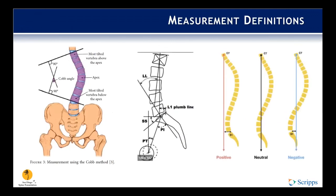For measurement definitions: the Cobb angle is defined by the intersection of two lines — one perpendicular to the superior end plate of the most angled vertebra above the deformity, and one perpendicular to the inferior end plate below. Greater than 10 degrees is considered scoliosis. Pelvic incidence is the angle between a line drawn perpendicular to the sacral end plate at its midpoint and the line from that midpoint to the bicoccyfemoral axis midpoint — this does not change during spinal-pelvic movement. Lumbar lordosis is a sagittal Cobb angle measured from the superior end plate of L1 to the superior end plate of S1. Pelvic tilt changes with positional change, i.e. sitting to standing. Finally, sagittal vertical axis is the offset between the sagittal C7 plumb line and the posterior superior corner of the sacrum.